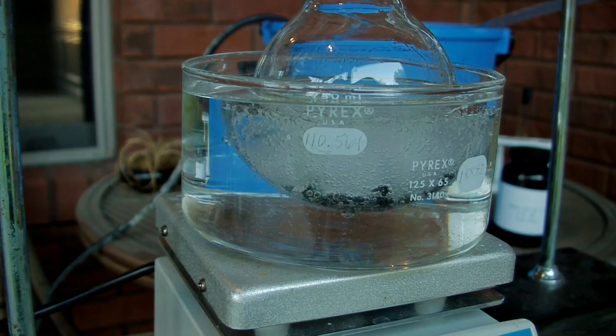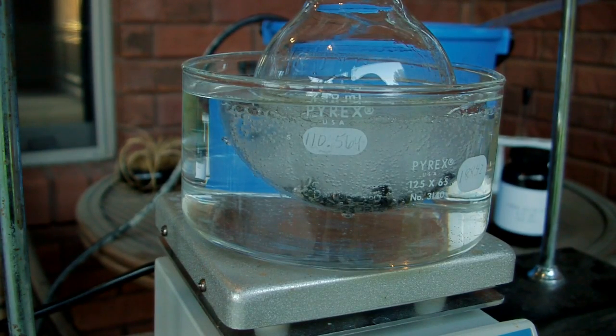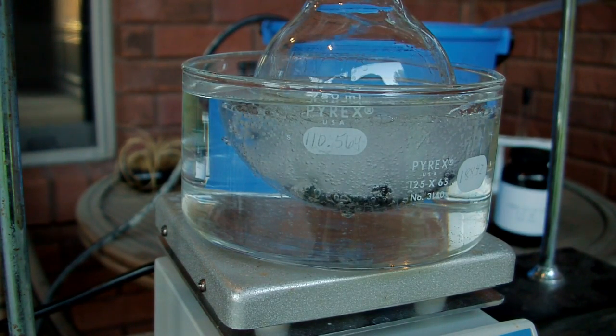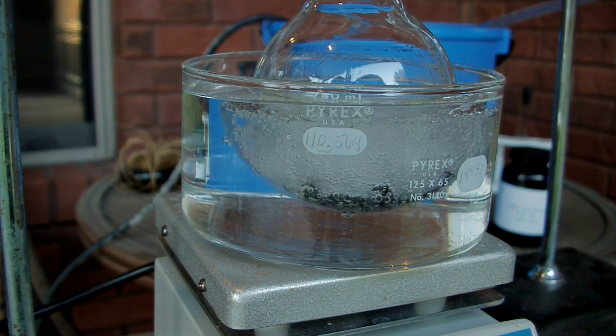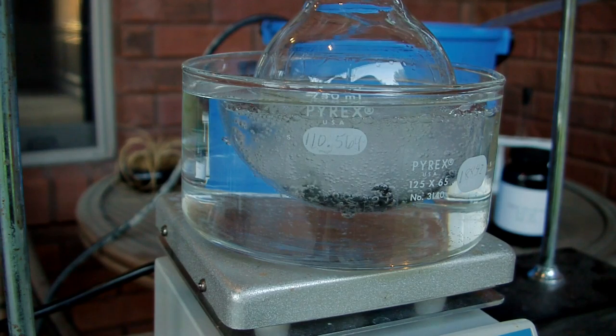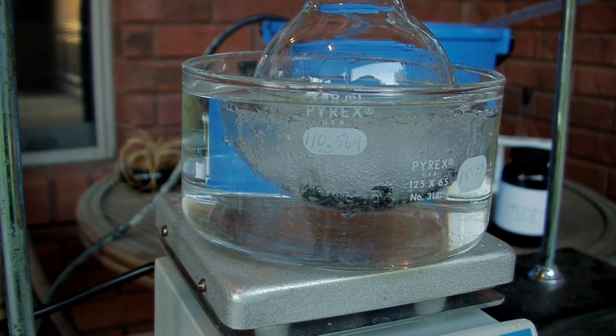So in no time at all we're getting a little bit of boiling going on. The dichloromethane boils at about 40 degrees Celsius and methanol is 65. So that should be enough of a difference so that simple distillation will work.